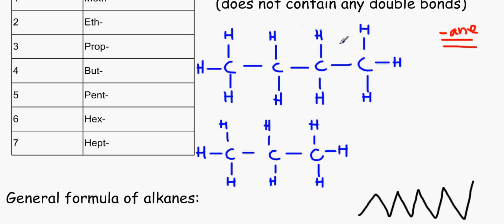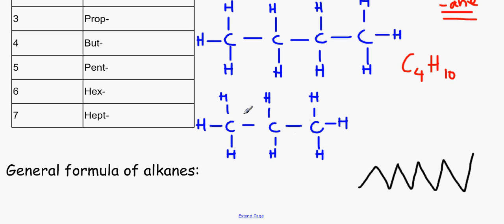So what is the molecular formula for butane over here? It's got 4 carbon atoms and if we count the hydrogen atoms, we can see that it's got 10. So it will be C4H10. For propane, it will be 3 carbon atoms and 8 hydrogen atoms.